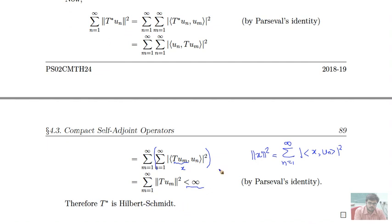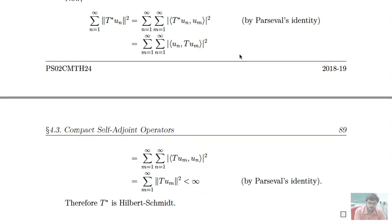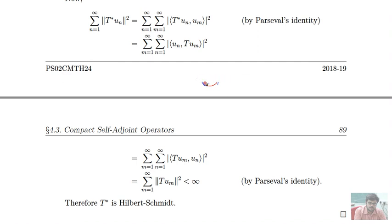So we have proved: if T is Hilbert-Schmidt, then T* is Hilbert-Schmidt. The converse is also true — if T* is Hilbert-Schmidt, then applying the same argument to T*, its adjoint (T**) = T is Hilbert-Schmidt. So T is a Hilbert-Schmidt operator if and only if T* is Hilbert-Schmidt, just as with the set of compact operators.